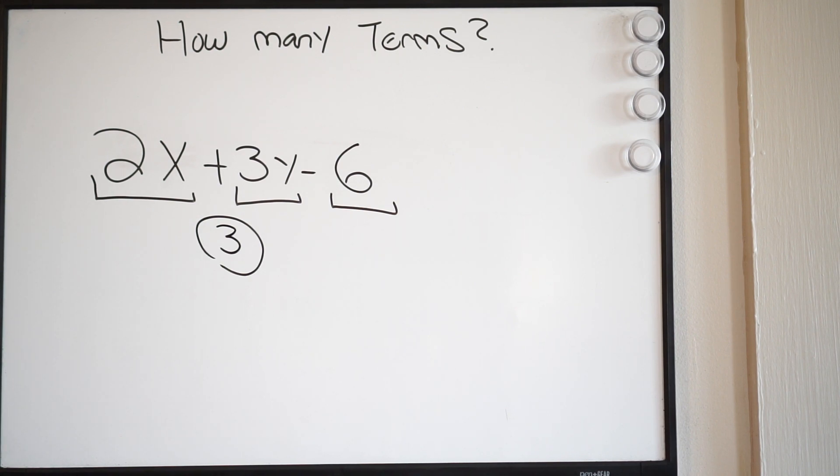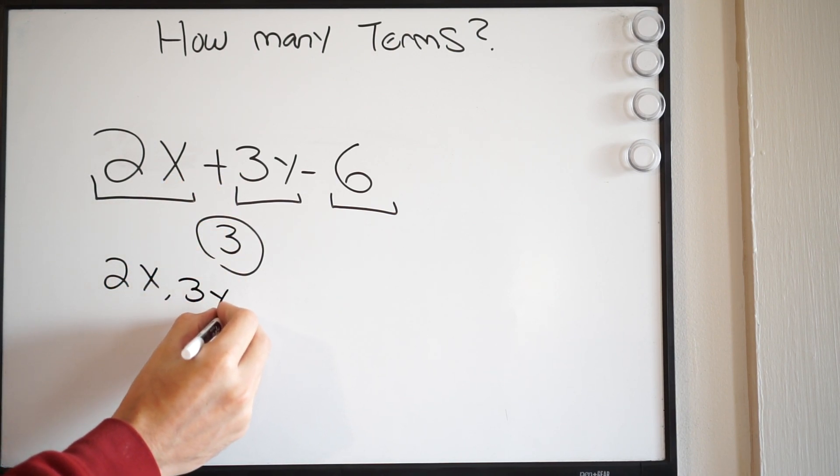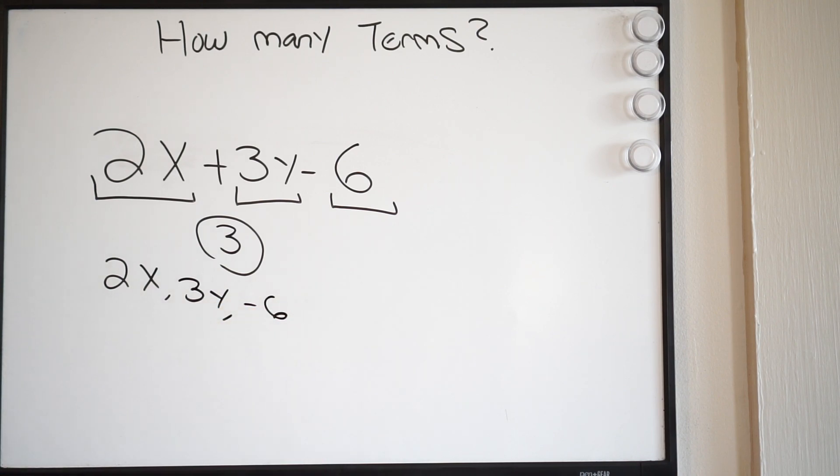And if you wanted to list them, you could say, okay, 2x is a term, 3y is a term, right? And you could say negative 6 is a term.